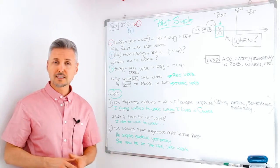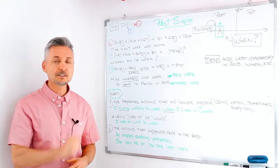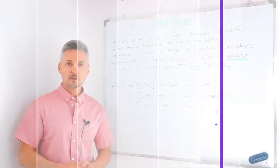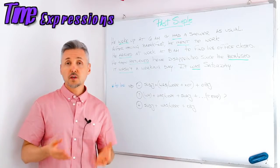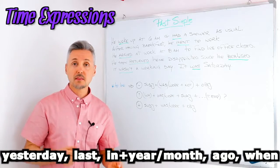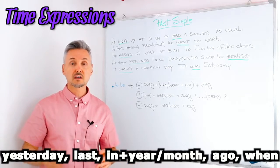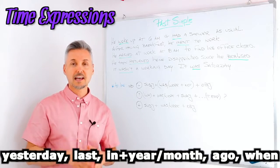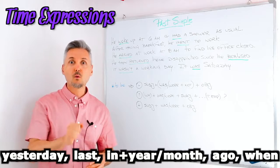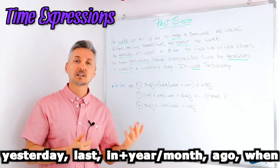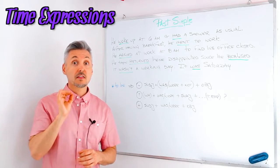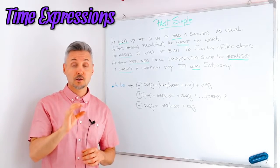Now I'm going to explain the little story I gave you at the beginning. We're back with the past simple. We use time expressions such as: yesterday, last week, last month, in 2015, ago, and 'when,' like 'when I was in Canada.' Don't forget the time expressions — they are essential to understand this tense.